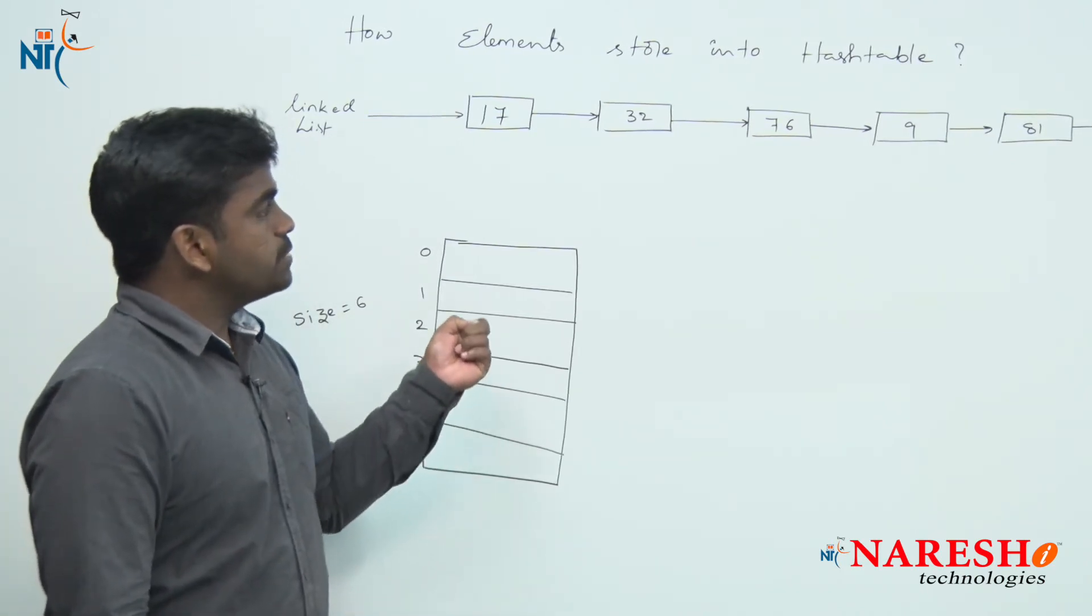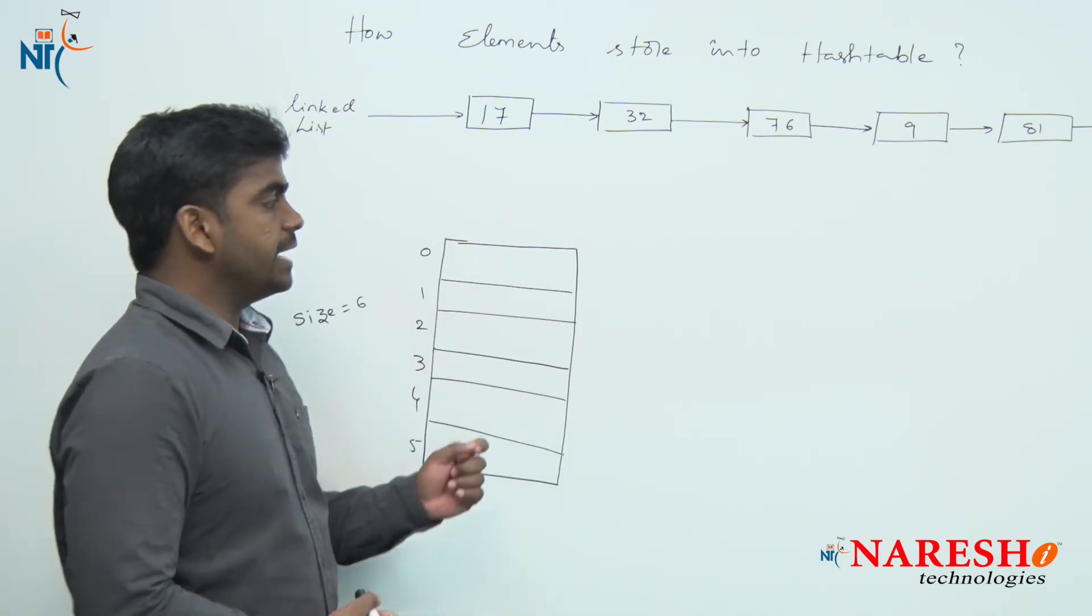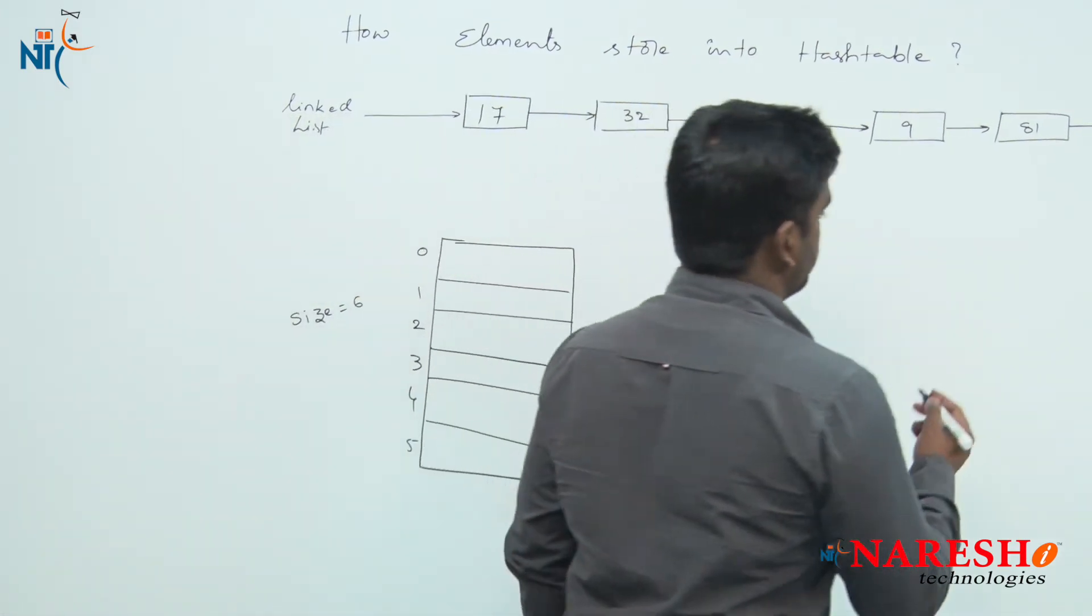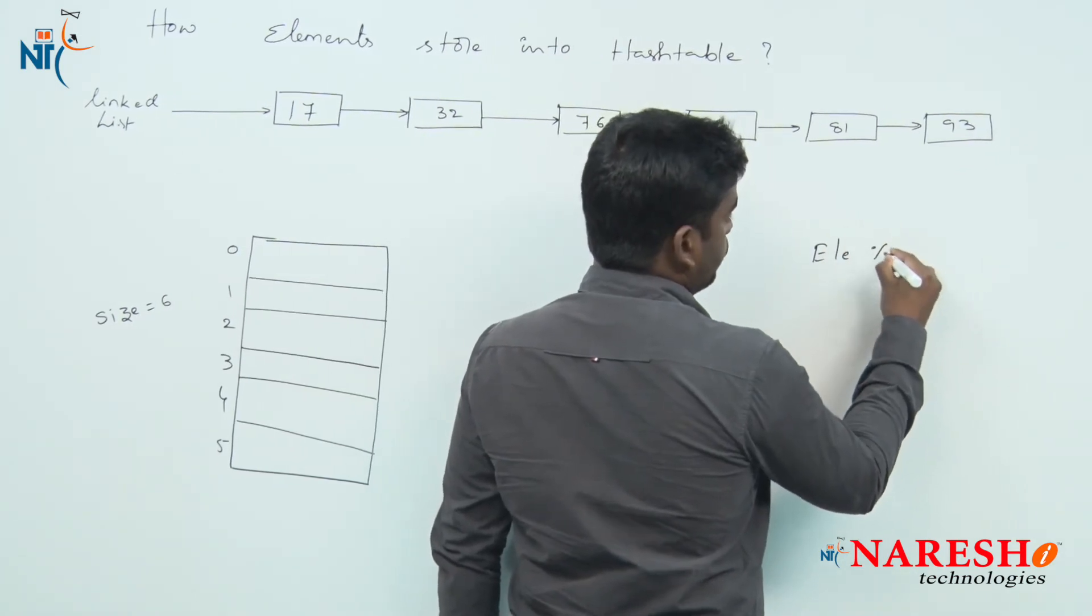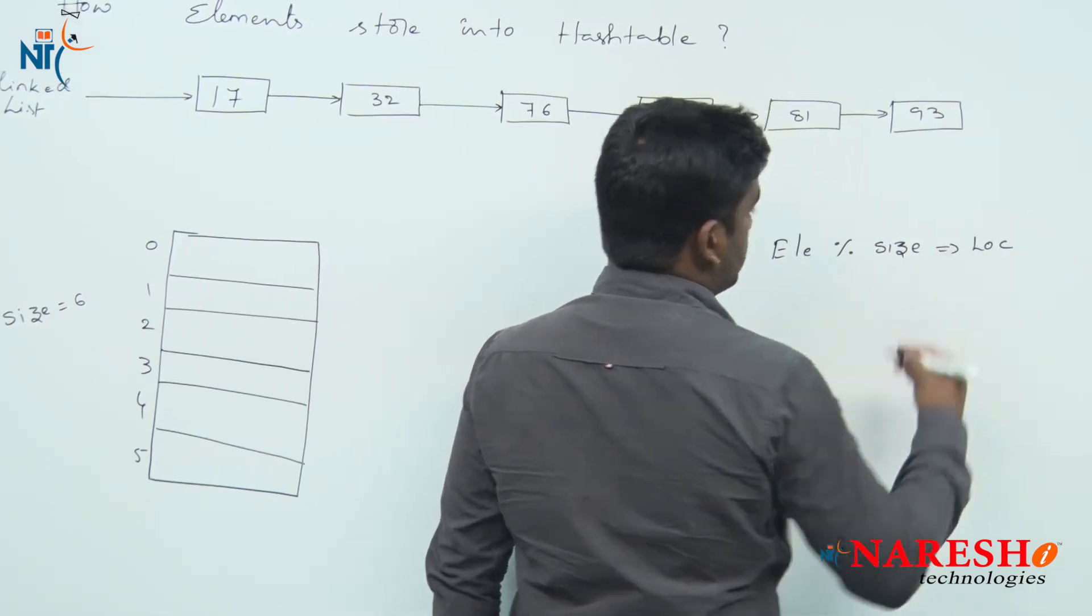Now how will the elements be stored into the hash table? Just with the help of one formula. What is that formula? That element we need to perform mod operation with the size of hash table, then it will give you the location.